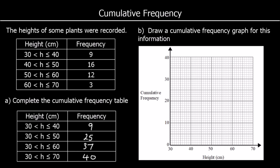Now we're going to plot this on a graph. We are going to plot the top point against the frequency. So there are 9 plants with a height of less than 40 centimetres — by the time we get to 40 centimetres there have been 9 plants — so we're going to plot 9 against 40. Then we're going to plot the frequency of 25 against 50, and 37 against 60, and 40 against 70. And we're going to join these up with a smooth curve.